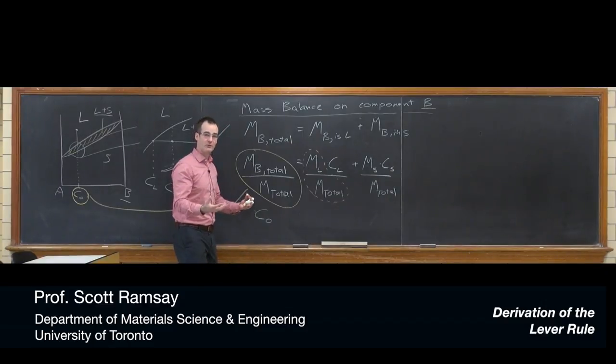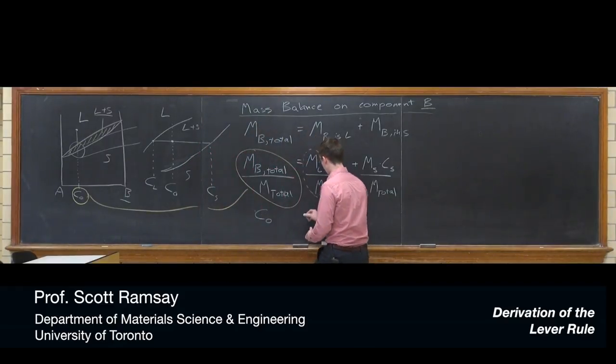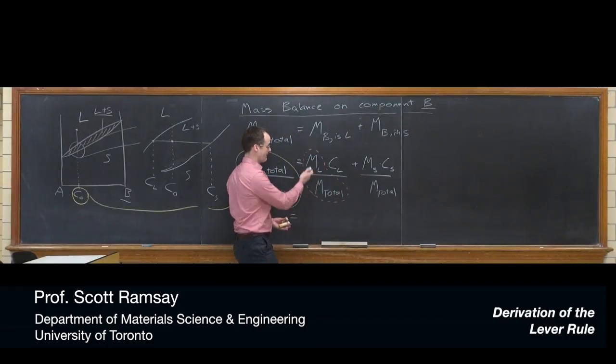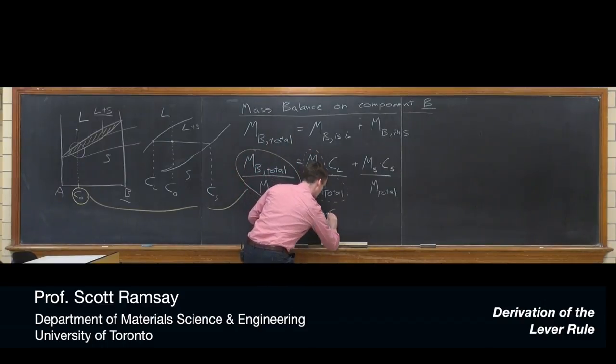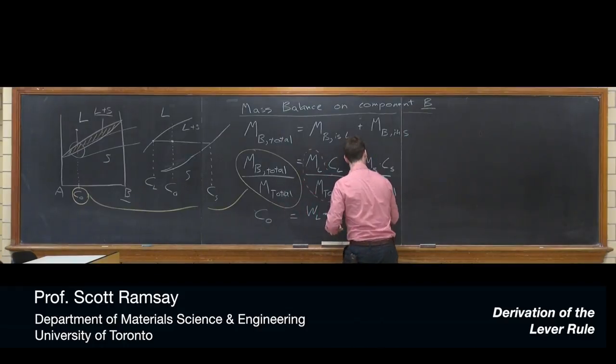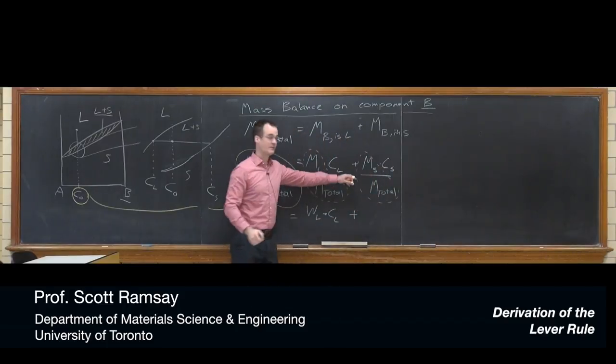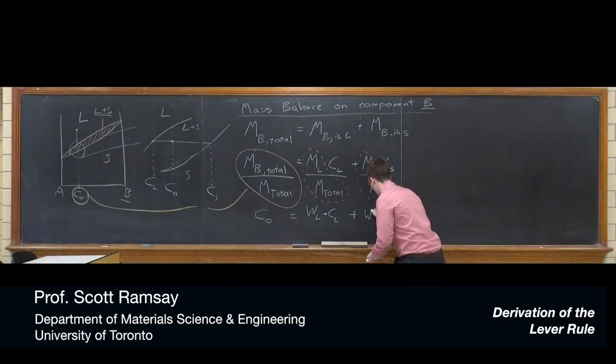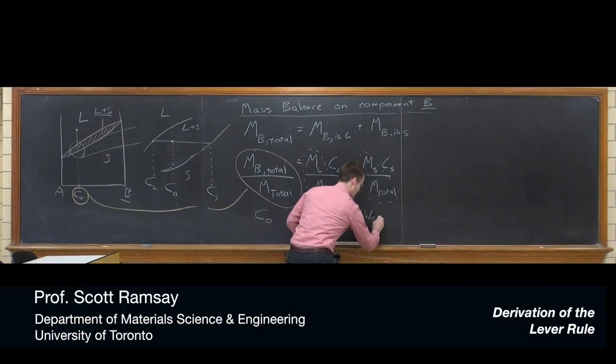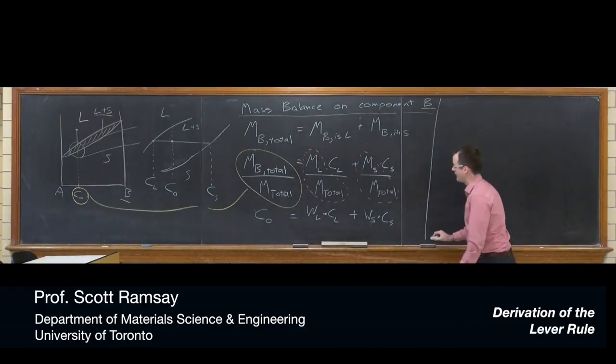And then just mass of liquid divided by the mass total is, well, that's one of the things we're after, isn't it? It's a fraction of the total that is one phase or the other. So we could call that the weight fraction liquid, W sub L, multiplied by composition liquid. And then again, over here, what's the mass of the solid divided by the total mass? Well, that's just exactly the weight fraction solid. So we're getting somewhere now. Actually, we've got to a pretty good point here.